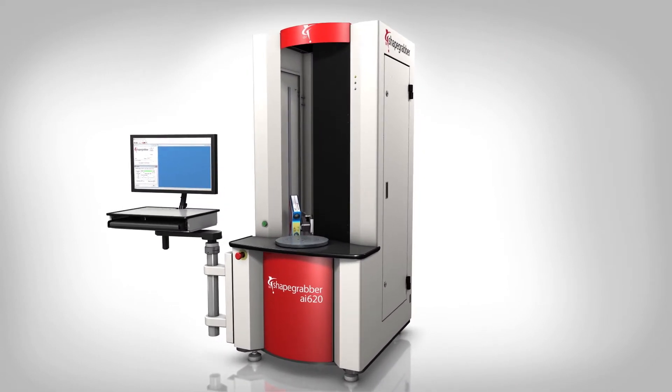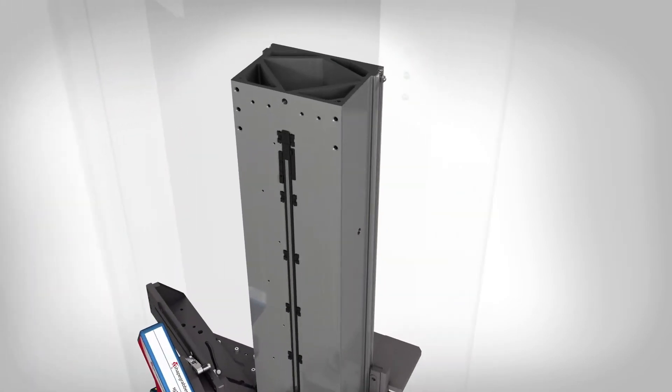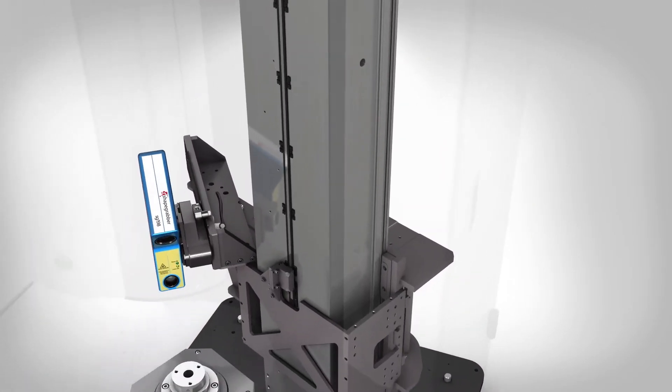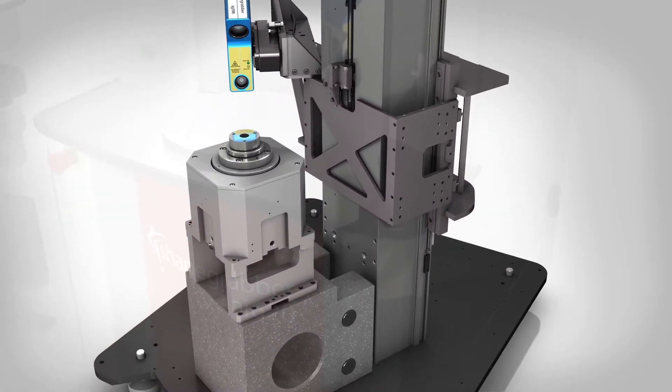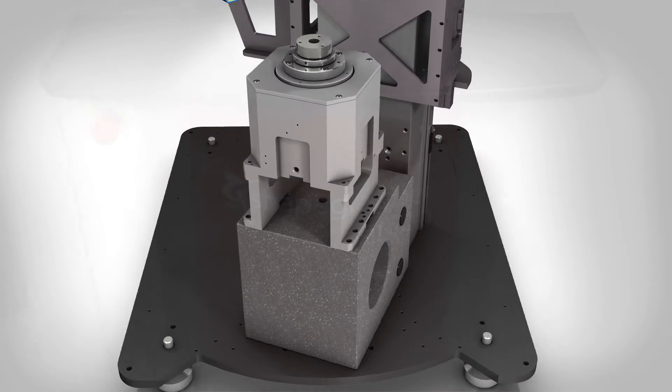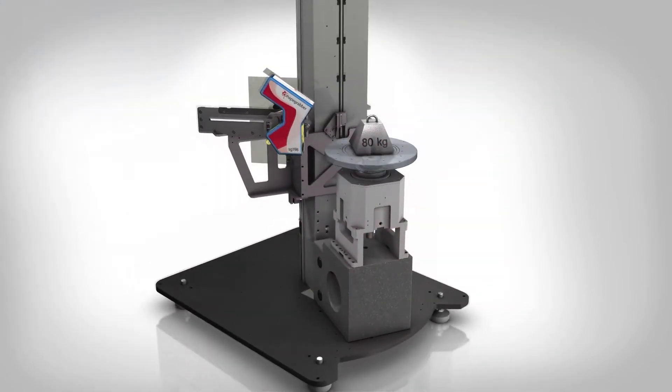The AI620 is constructed from stable components which create a rigid orthogonal structure for precision metrology performance. The heavy granite base isolates vibration and provides a rigid structure for the linear axis and rotary motion system allowing heavier parts to be measured while maintaining high accuracy.